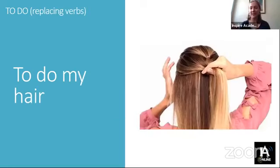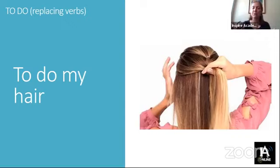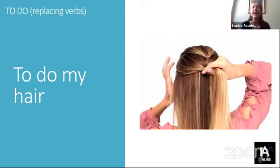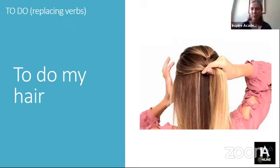And finally, replacing verbs. Our example is 'to do my hair.' What we're replacing here is multiple verbs — to do my hair can mean to wash, to dry, to cut, to brush, to style — all of these different things. But instead, we often say 'to do' to umbrella all of these verbs, and through context we understand what is meant.